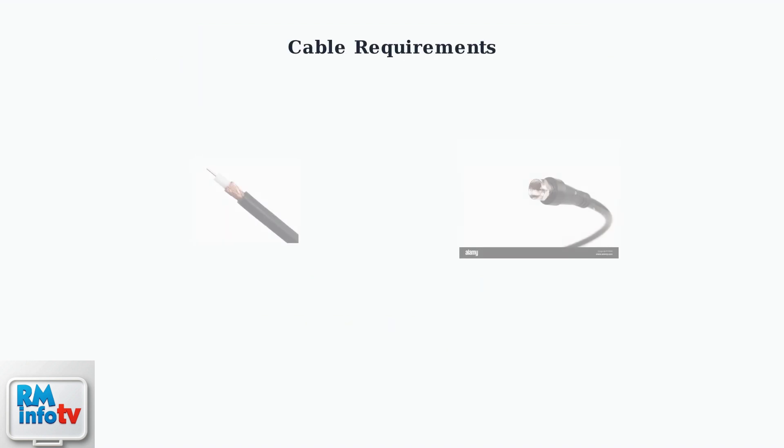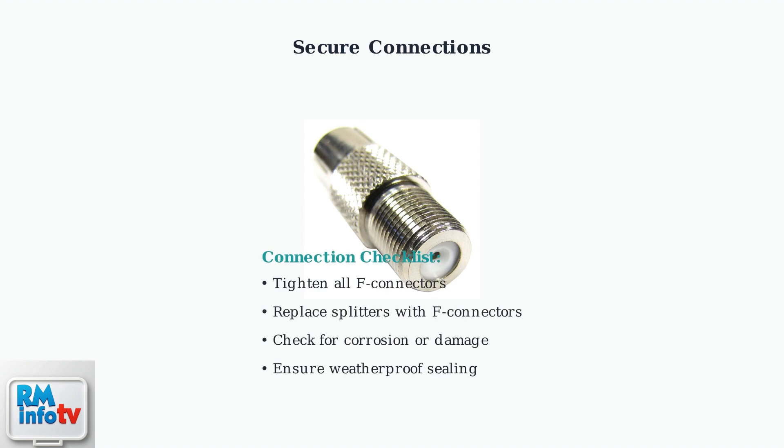When troubleshooting weak signals, your first step should be checking your coaxial cable. SHA-DIRECT has specific cable requirements that are critical for proper signal transmission. SHA-DIRECT requires RG6 or higher rated coaxial cable. RG59 cable may work temporarily but can burn out and cause signal problems. The difference is in the cable's ability to carry high-frequency signals over long distances. Ensure all connections are secure and properly made. Replace any splitters with female F connectors for optimal signal transmission.